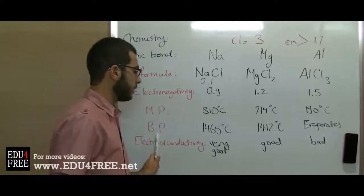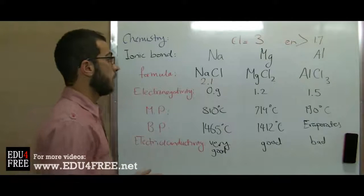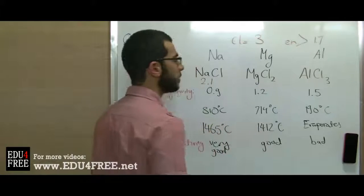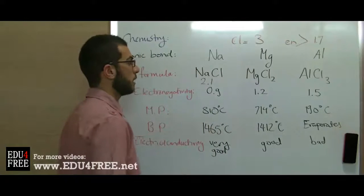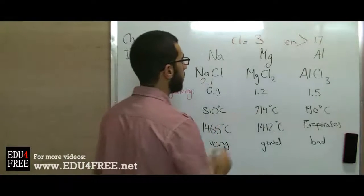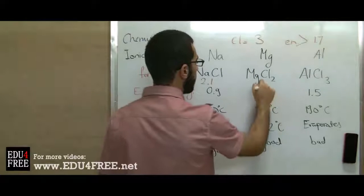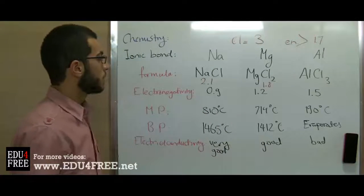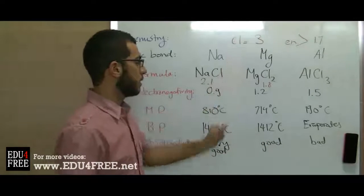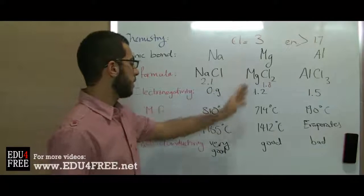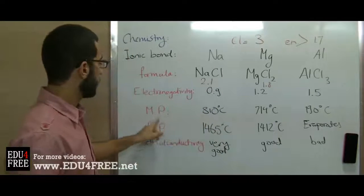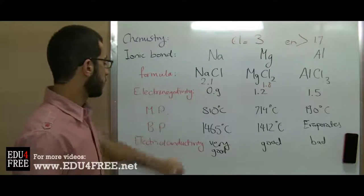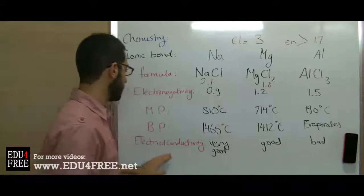For magnesium, the electronegativity is 1.2. When we calculate the electronegativity difference of the compound: 3.0 minus 1.2 gives 1.8, which is still higher than 1.7. So magnesium chloride is also considered an ionic compound. It has a relatively high melting point and boiling point, close to sodium chloride, and it conducts electricity well.